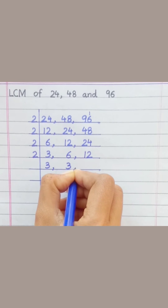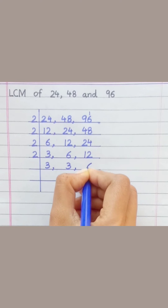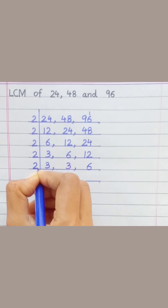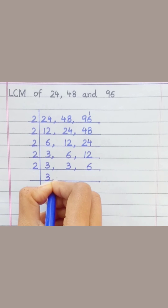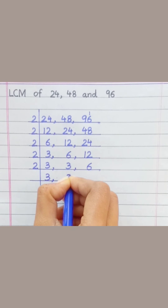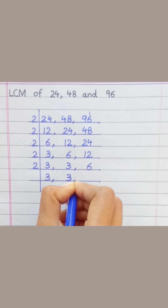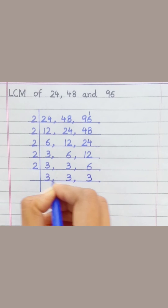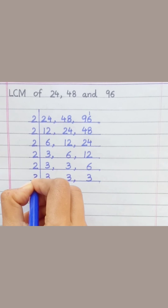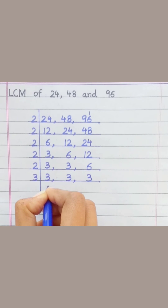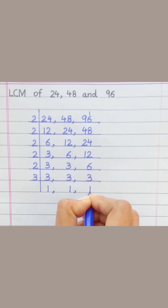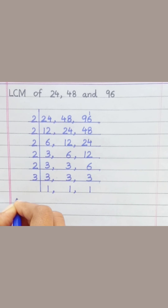Two threes are six, two sixes are twelve. Two threes are six, three ones are three, three ones are three, three ones are three. LCM equal...